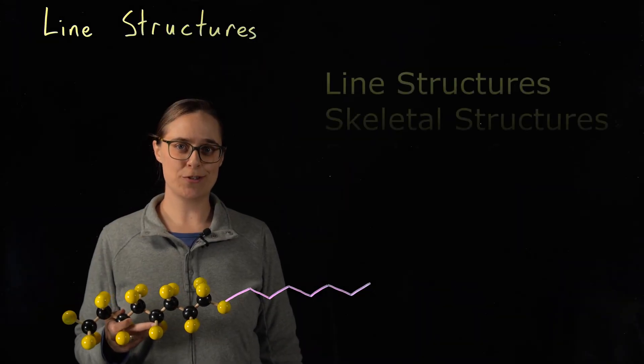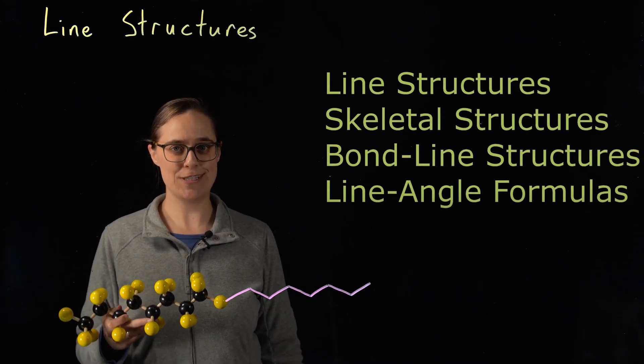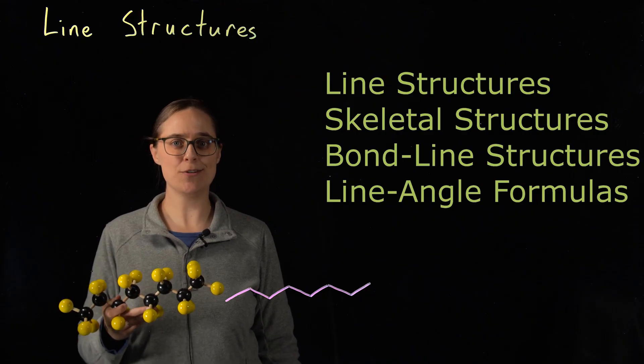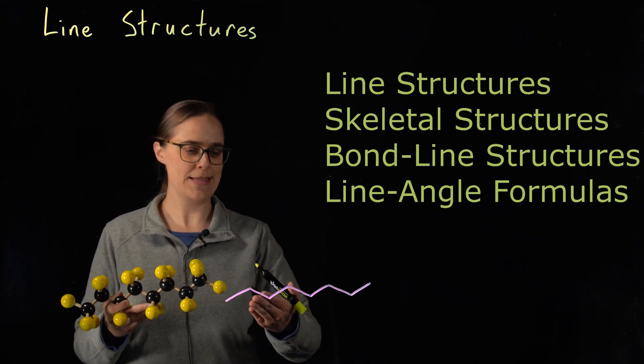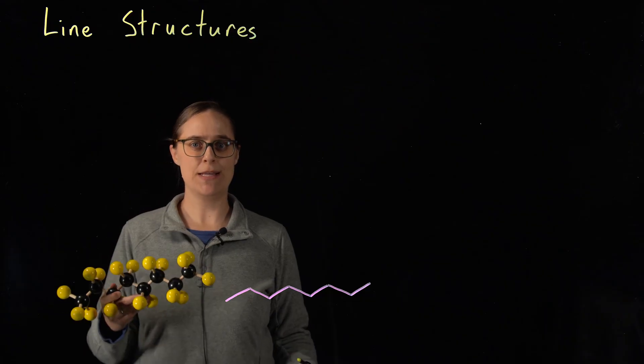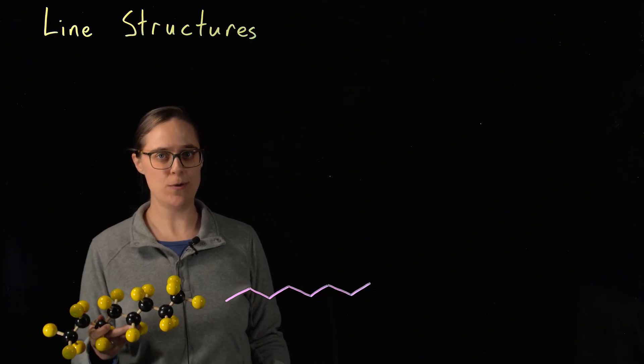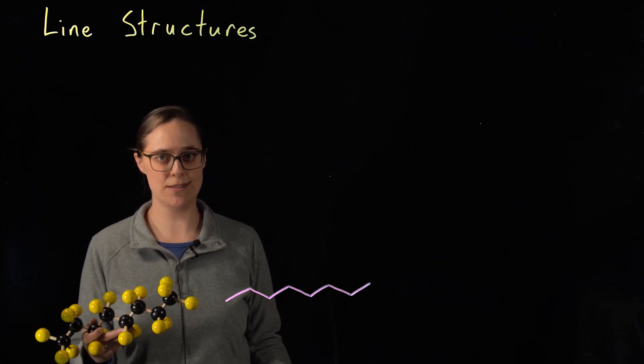Line structures, skeletal structures, bond line structures, line angle formulas. These are all different names for the same thing, this method of drawing organic molecules. Line structures are useful if you want to draw molecules with lots of carbons and lots of hydrogens.